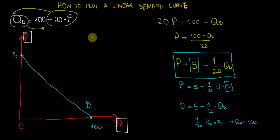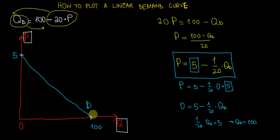So one more time: even though the demand function has quantity demanded as the subject, my suggestion is to make price the subject. Look at the intercept on the price axis, look at the intercept on the quantity axis, connect those two points, and we will have our linear demand curve. Hope this all makes sense. In the next video I will show how we can plot a linear supply curve. Thanks for watching — if you like the video, please subscribe.